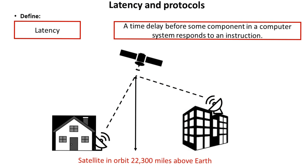So let's start with the first of our key terms: latency. Latency, effectively, is the time delay before some component in a computer system responds to an instruction. Now, typically inside a computer at the sort of speeds we're operating at, we don't see an issue with latency. Everything is happening so fast, it's perceived as happening instantaneously.